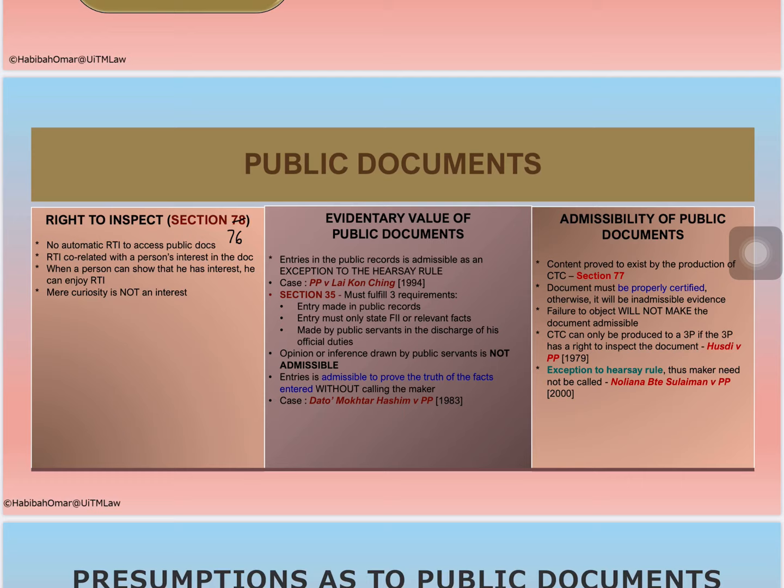There is a common misconception that if the public have access to a document, it becomes a public document — that is not correct. When you talk about public documents, whether you can obtain a certified true copy or whether you have a right to inspect a document depends on whether you have an interest in that particular document. If you have no interest, you have no right to inspect it.